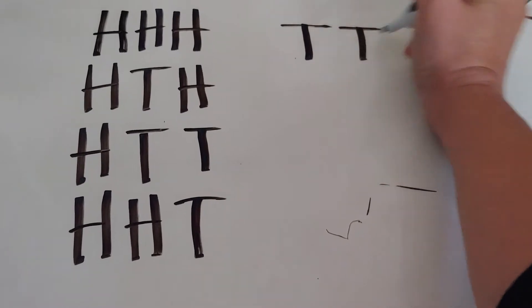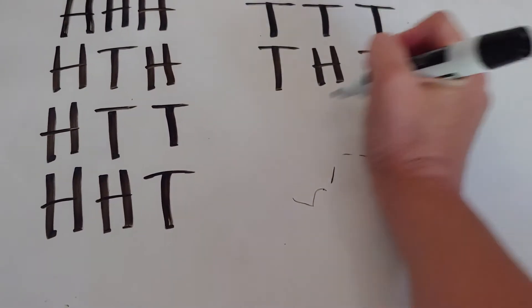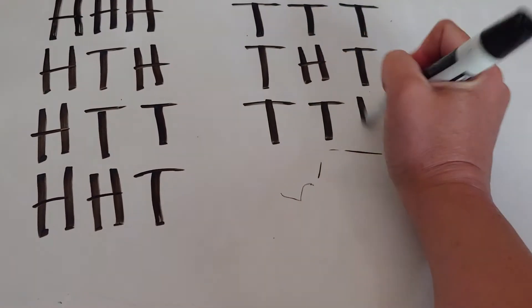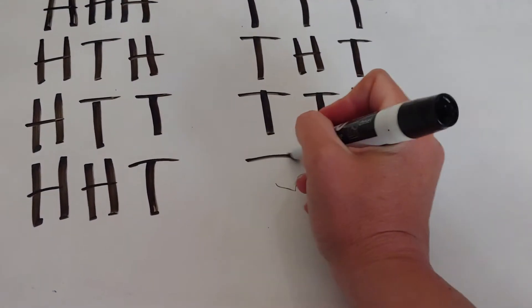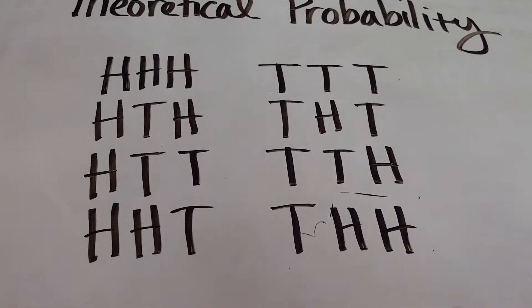Or you can get three tails, tails-heads-tails, tails-tails-heads, and tails-heads-heads. So there are eight different outcomes that can happen when you are flipping a coin three times.